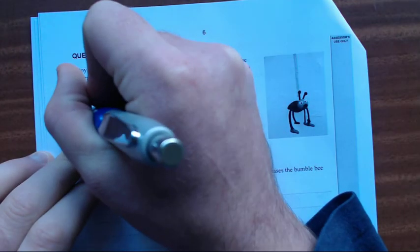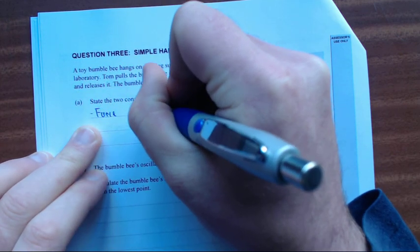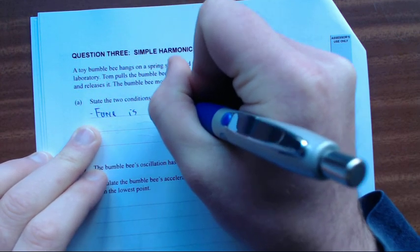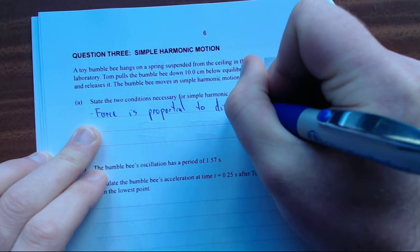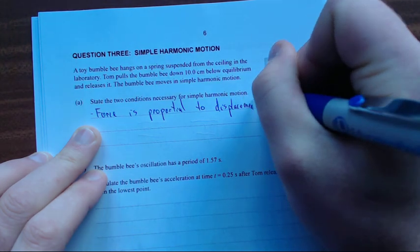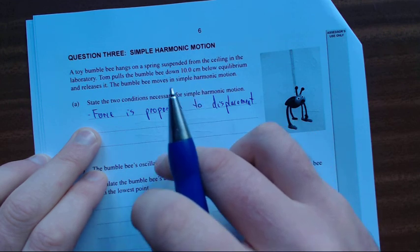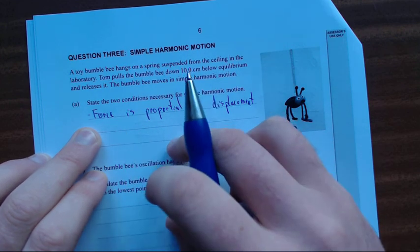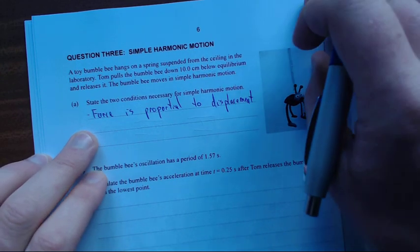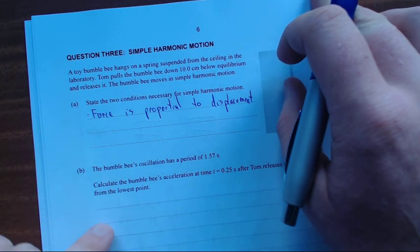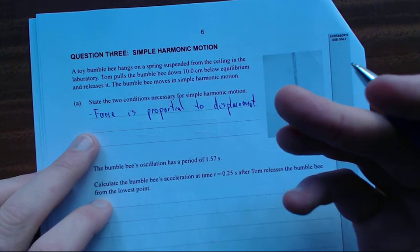Let's just write it down. Force is proportional to displacement. When I say that, I mean they're linearly proportional. So if I increase one by 10, the other one's going to increase by a scaled amount. They're linearly proportional, not quadratically proportional or something like that. Otherwise that wouldn't be simple harmonic motion.